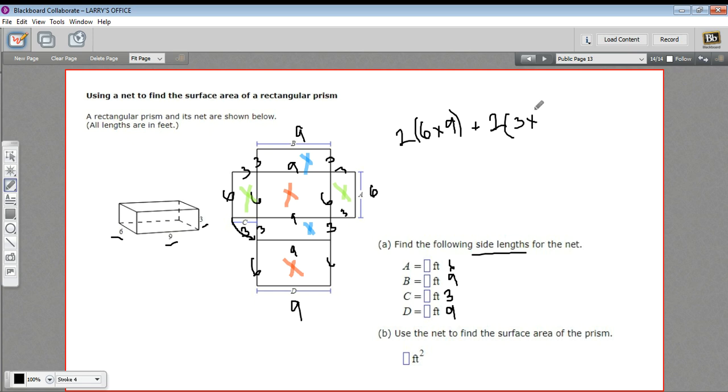So we'll write it like this: two times three times six. And then we'll add that to the three by nine sides, and there's two of those.